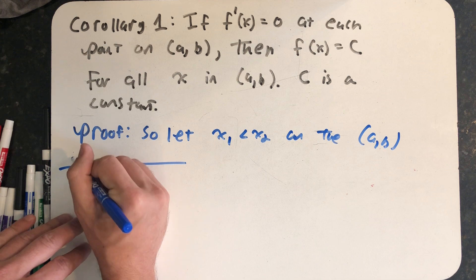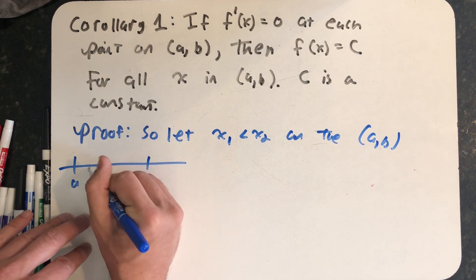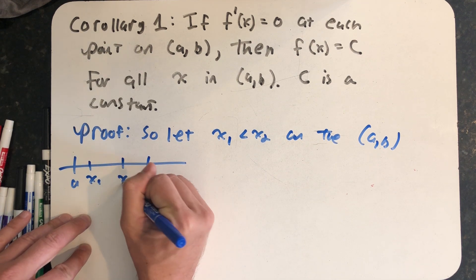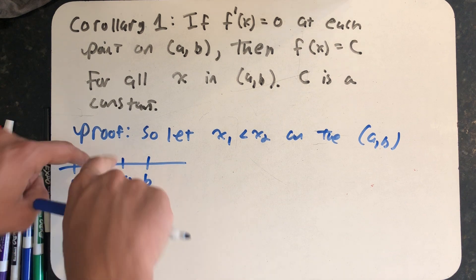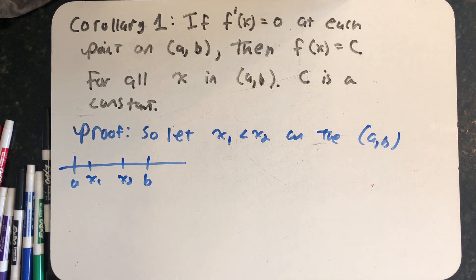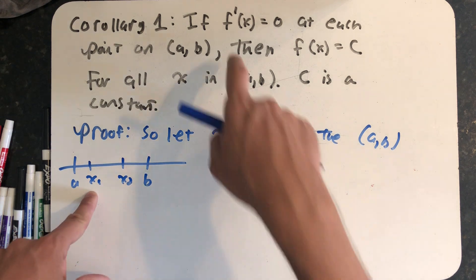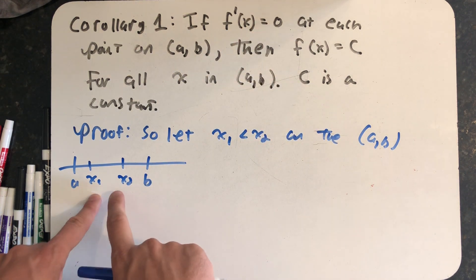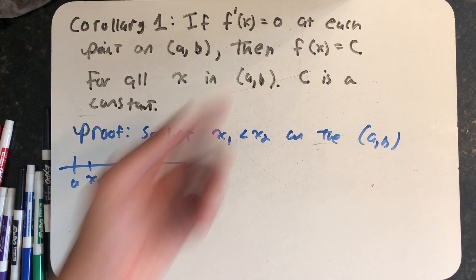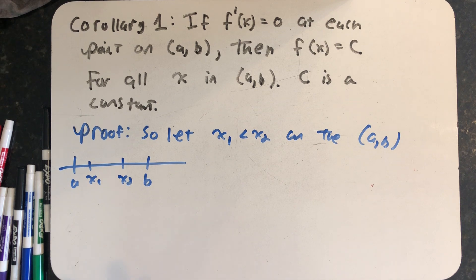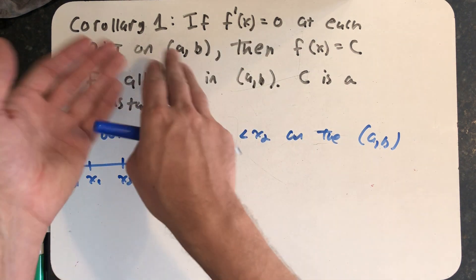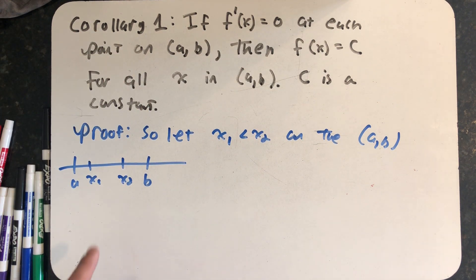In other words, if I had an x-axis with a and b in there, well then x1 and x2 just happen to be any point I want them to be, but they both have to be on the inside. All right, well I know f prime of x1 and f prime of x2 are equal to zero because of the hypothesis, right? f prime of x equals zero for every point on (a, b).